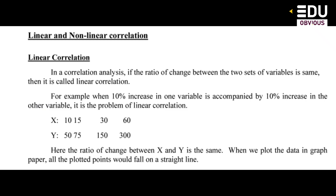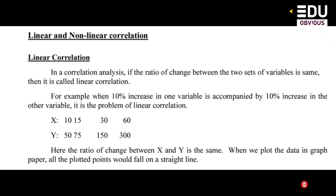What is linear and non-linear correlation? In a correlation analysis, if the ratio of change between the two sets of variables is the same, it is called linear correlation. For example, when a 10% increase in one variable is accompanied by a 10% increase in the other variable — both change in the same proportion — it is a linear correlation.